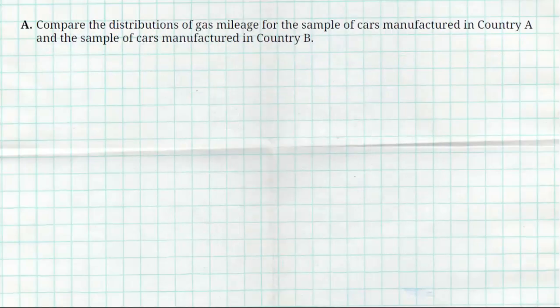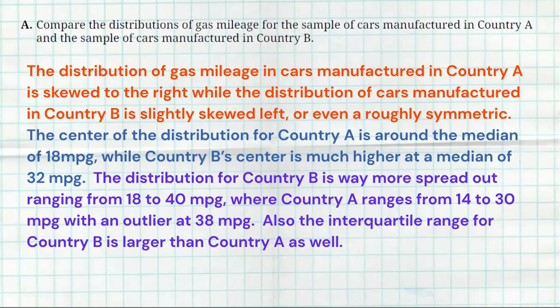Now Part A asks a pretty simple question. Just asks us to compare the distributions of gas mileages for the two countries. Just make sure you use comparison language: higher than, less than, more than, greater than, and make sure you do it in context. So here's what I wrote down for my answer. The distribution of gas mileage in cars manufactured in Country A is skewed to the right, while the distribution for cars manufactured in Country B is slightly skewed left or even roughly symmetric.